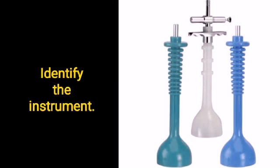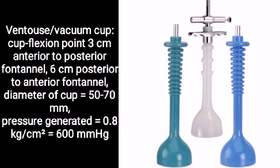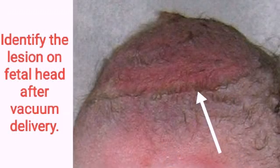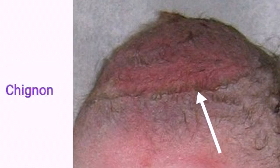Identify the instrument: Ventouse cup. Identify the lesion on fetal head after vacuum delivery: Chignon. Answer: M.